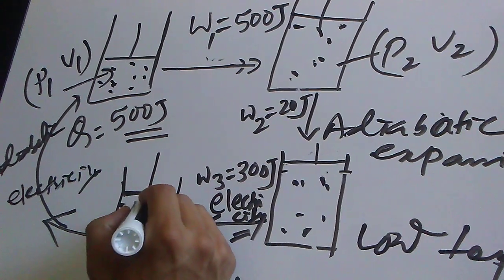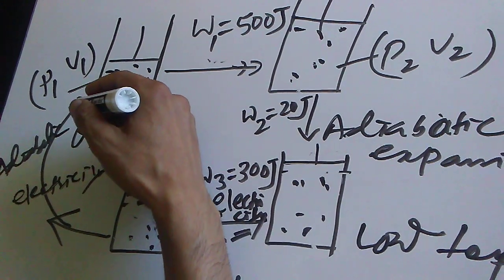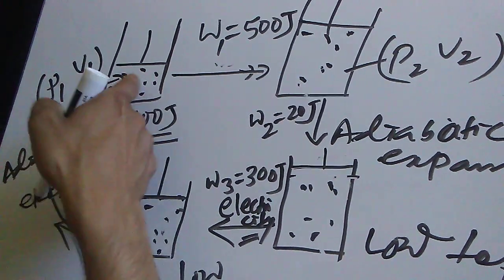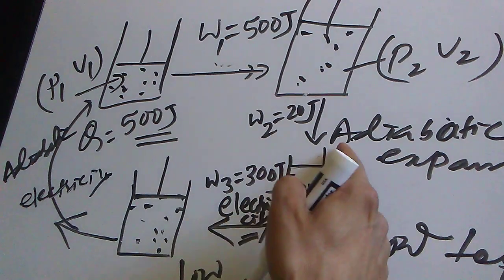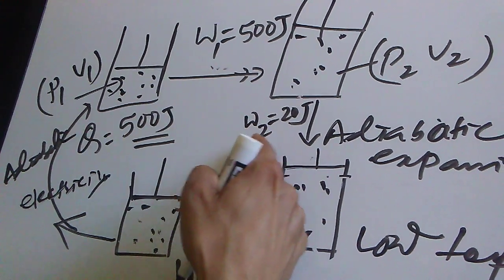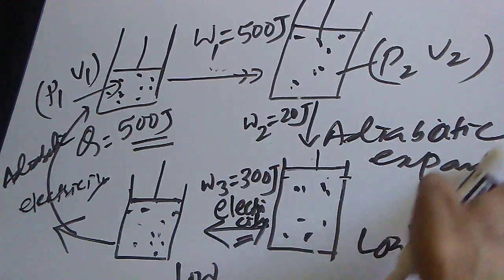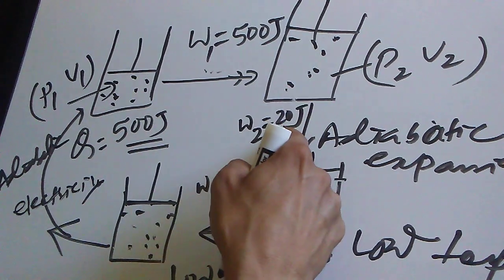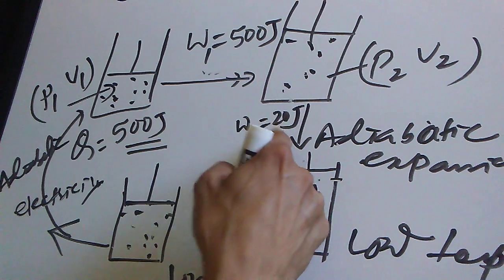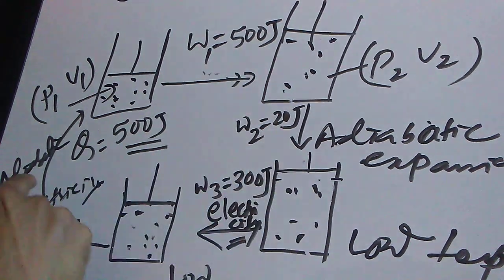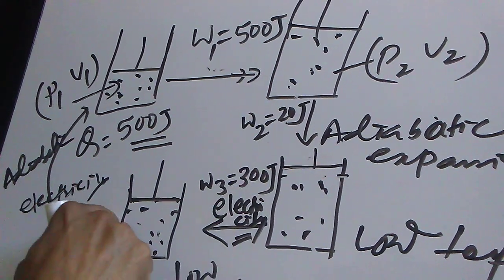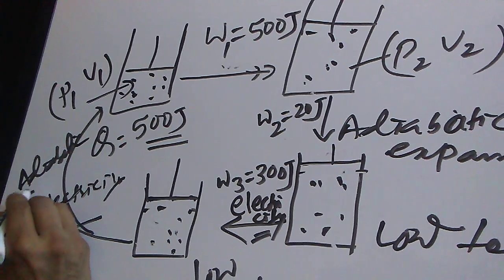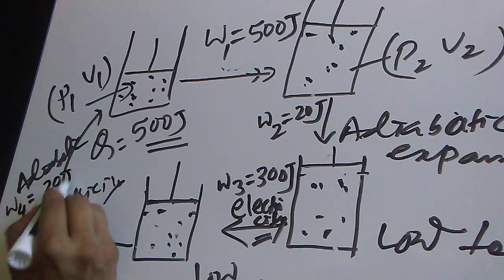From that state, we applied more electricity and compressed the gas adiabatically back to the initial state. Since the adiabatic expansion gave us W2 equals 20 joules, the same amount of energy must be used to compress adiabatically back, so W4 equals 20 joules.